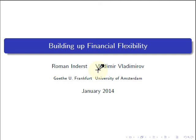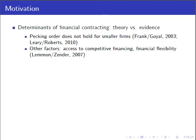This paper is joint work with Roman Indust and it's on building on financial flexibility. When Roman and I started thinking about this paper, we were intrigued by some recent empirical evidence showing that the best well-known theories on financial contracting, such as the pecking order theory or even the trade-off theory, do not seem to perform that well as the focus shifts towards smaller firms.